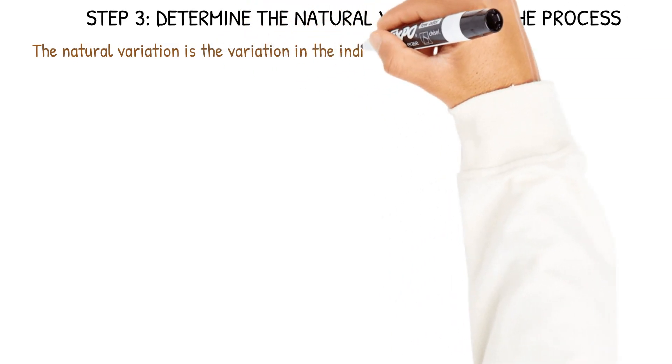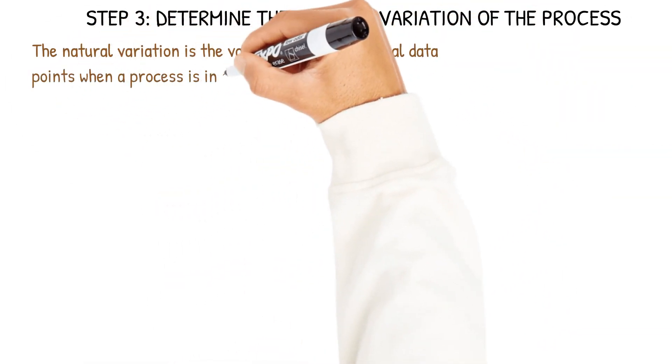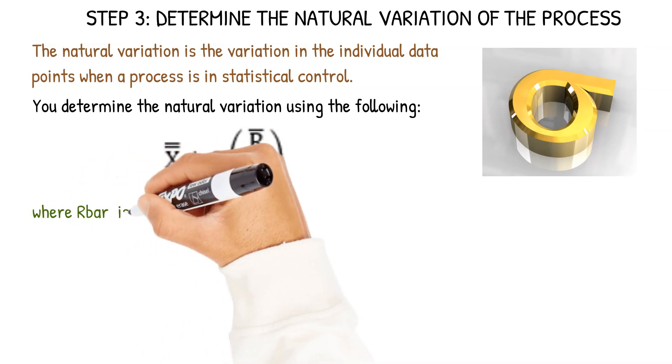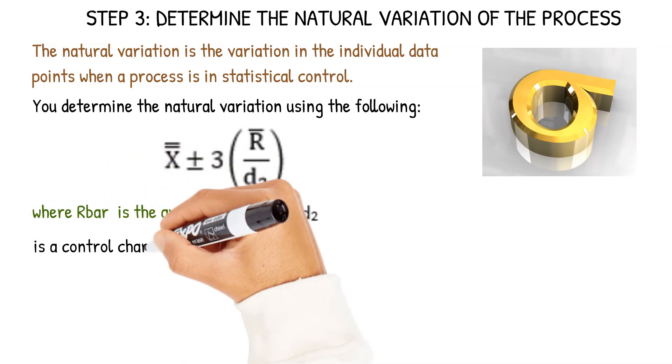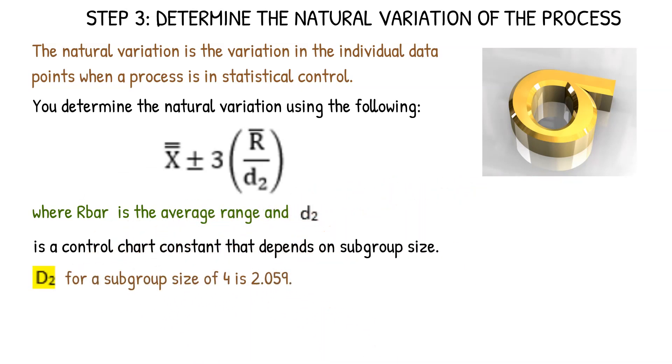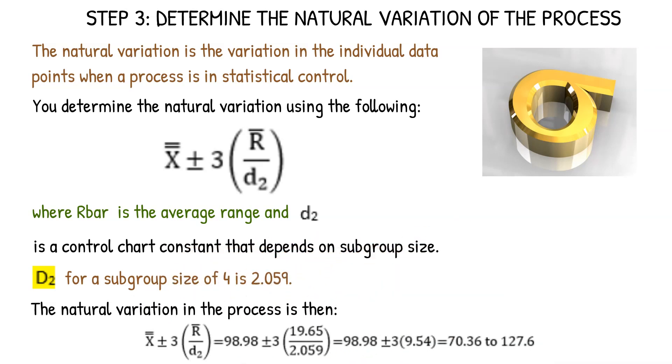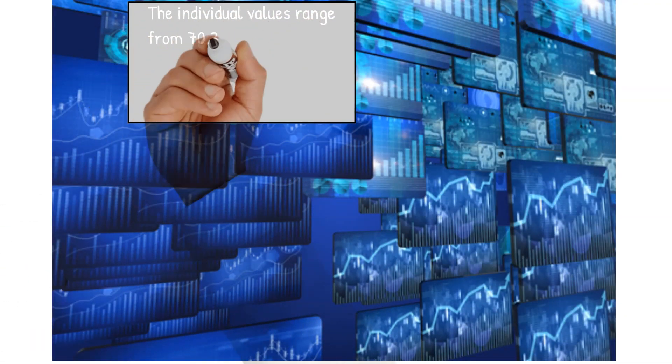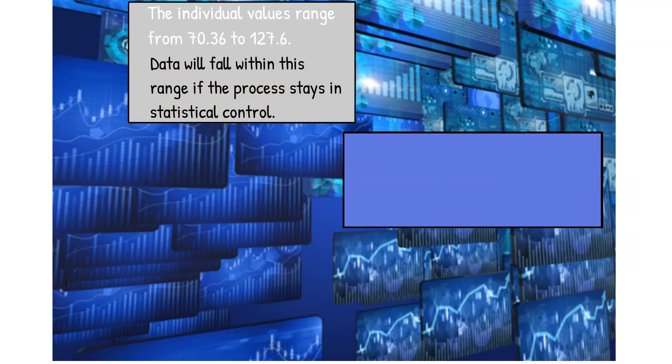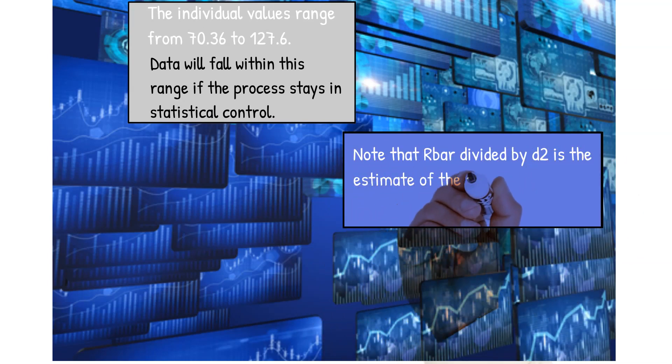In step three, we're going to determine the natural variation of the process. This is the variation in individual data points when the process is in statistical control. You determine the natural variation using the following equation: the average plus or minus three times the average range divided by D2. D2 is a control chart constant that depends on subgroup size. For a subgroup size of four, it's 2.059. With that calculation, we know that our individual values range from 70.36 to 127.6. Our data is going to fall within this range if the process stays in statistical control.